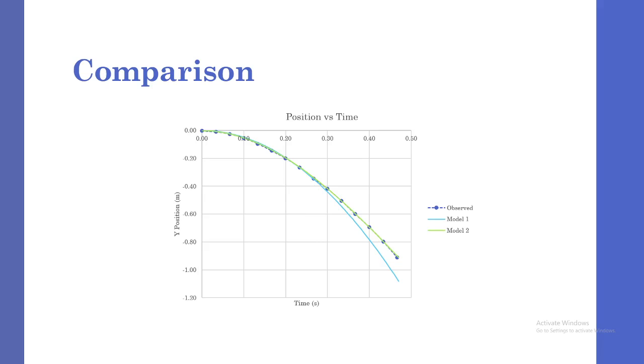We can get a graph of position versus time for the observation data and the model data. We see that model one predicts the paper ball to be at a much lower position, just like we saw in the code. Model two, however, is pretty accurate to the observed data, because model one fails to consider the force of drag and as a result, it affects the long slope and velocity.